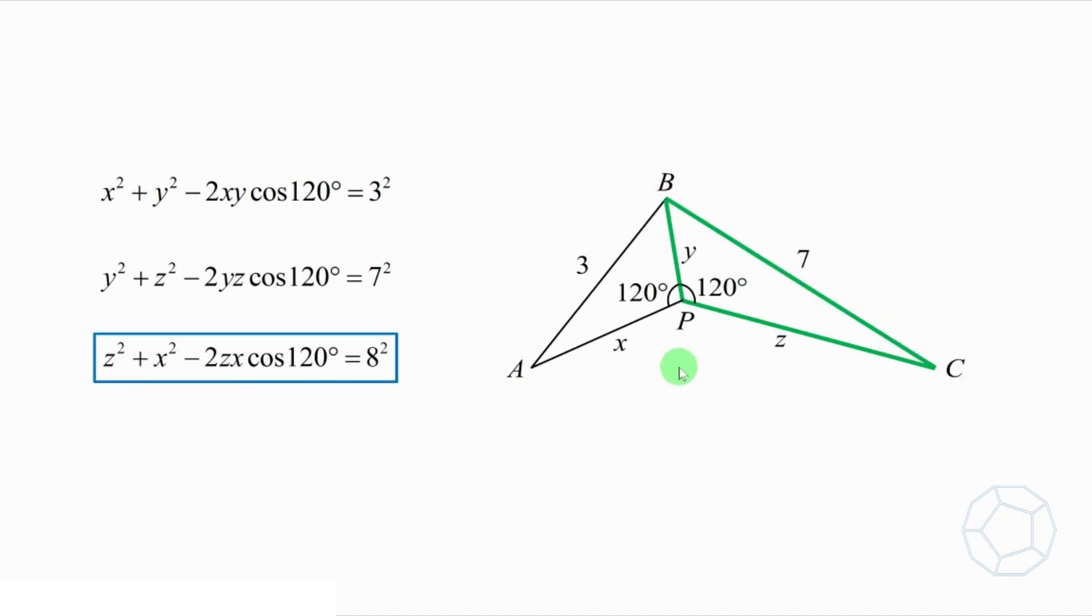For the third equation, we have the two sides Pc and Pa with length z and x respectively. As the sum of angles at the point is 360 degrees, therefore angle Apc is also 120 degrees. Now, we can draw the side Ca and the length is 8. Well, we get a nice figure. The length of three sides of triangle A, B, C are 3, 7, and 8. What's next?